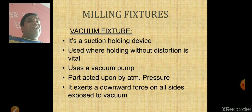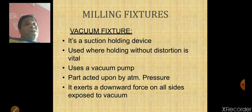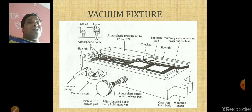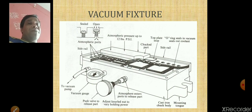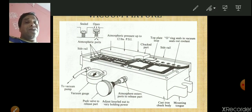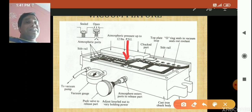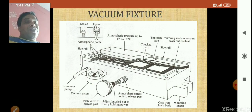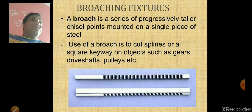Sometimes, if there are delicate parts that cannot be clamped with excessive force, we use a vacuum fixture — a suction holding device. The vacuum is created with a vacuum pump; atmospheric ports suck the air and create a vacuum. Because of that vacuum, atmospheric pressure acts on the workpiece, causing it to stick, and you can perform the cutting operation.